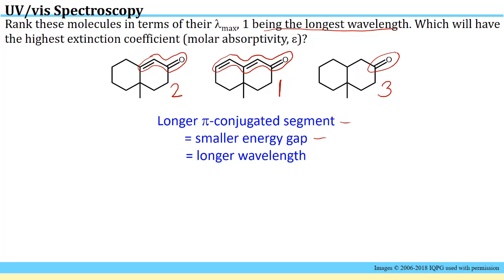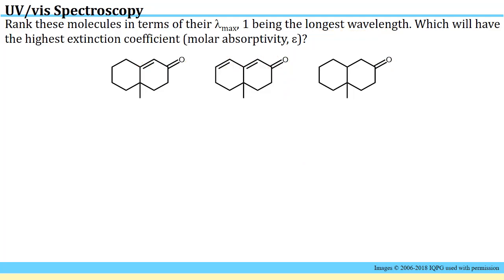As for this last part of the question asking about the highest extinction coefficient or molar absorptivity, this really has to do with how many units within the molecule are capable of absorbing the light. Generally, the more pi bonds you have, the more light you'll be able to absorb per molecule. So the highest extinction coefficient or the highest molar absorptivity should belong to this molecule.